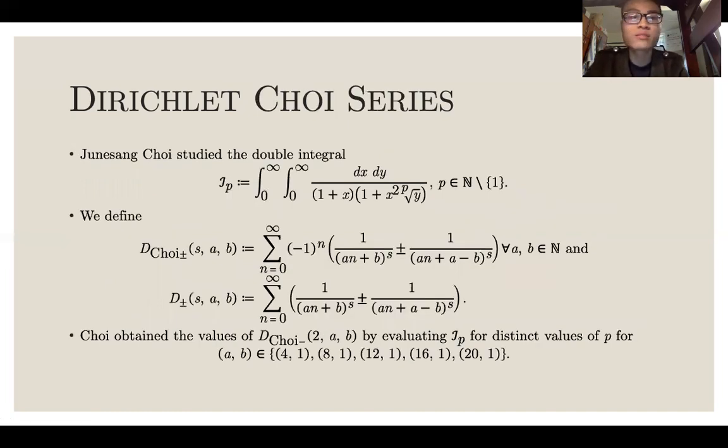Now, this is what we're mainly studying. Hulsong Choi studied the double integral from 0 to infinity, from 0 to infinity dx dy over 1 plus x times 1 plus x squared to the y. We define the Choi alternating Dirichlet series as negative 1 to the power of n times 1 over n plus b to the power of s plus or minus 1 over n plus a minus b to the s.